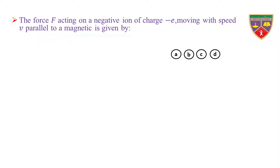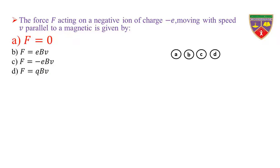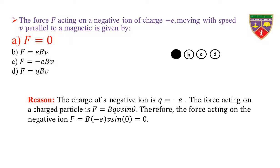The force acting on a negative ion of charge minus e moving with speed V parallel to a magnetic field is given by: Option A: F = 0. Option B: F = EBV. Option C: F = −EBV. Option D: F = QBV. The key is F = 0. Therefore, the correct option is A.